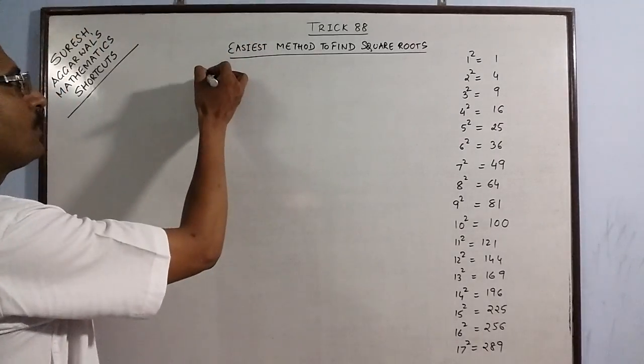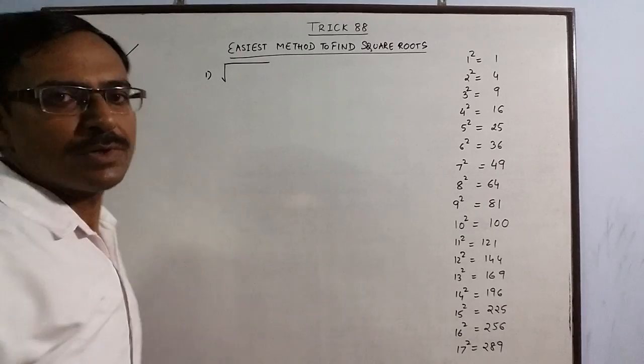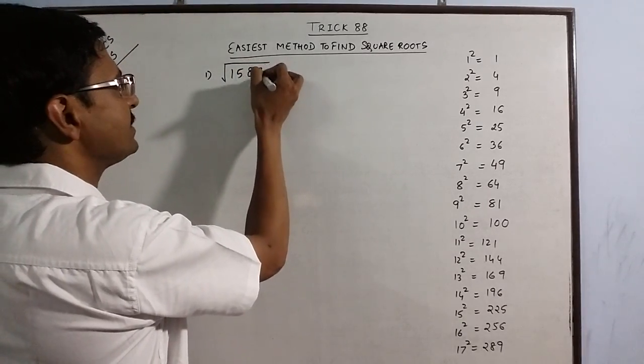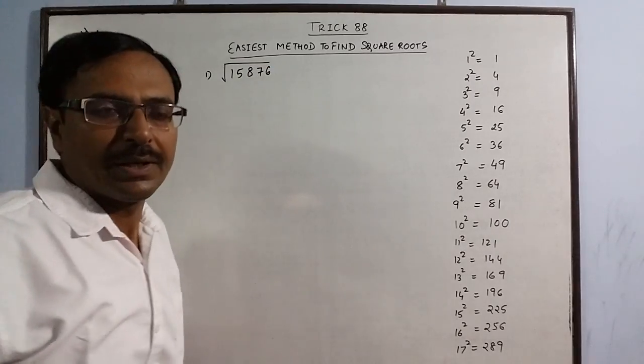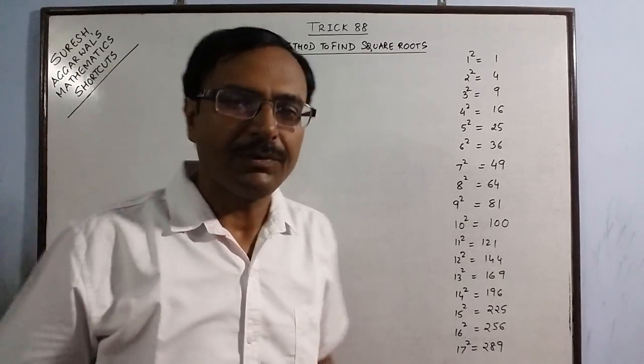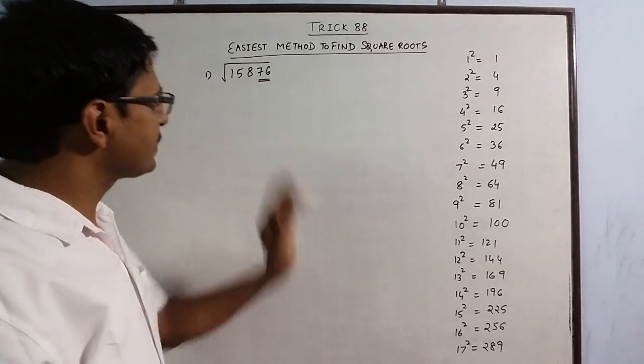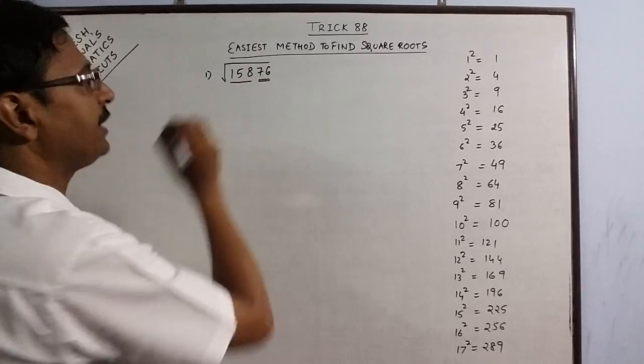So I am going to demonstrate this method by showing you how to find the square root of 15876. Now the steps for this is just break up this number in last two numbers and the remaining 158.